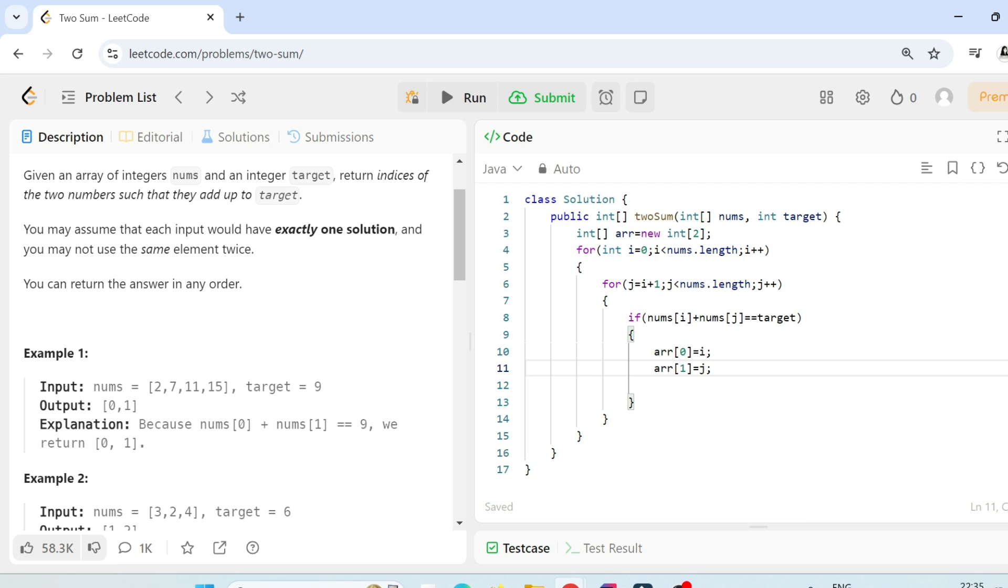That's it. And at last simply we will return this array. Because it is returning array. So after this for loop just return ARR. But here one more thing. After finding one solution. Because input would have exactly one solution. So if you get the solution then just break. No need to check further. Break means out of the loop.